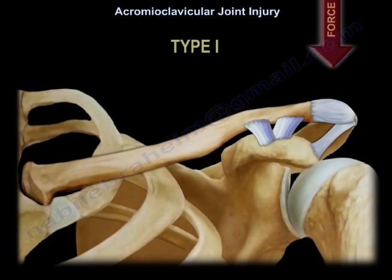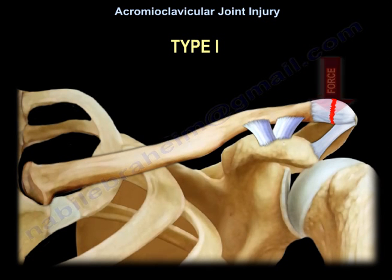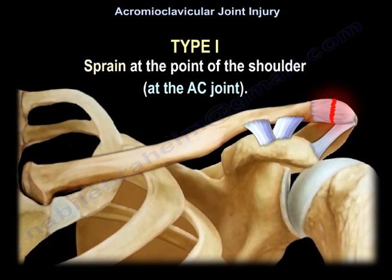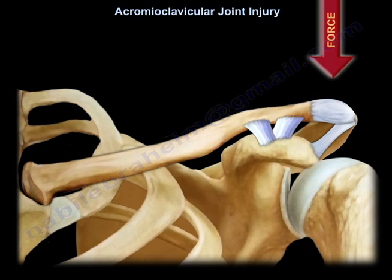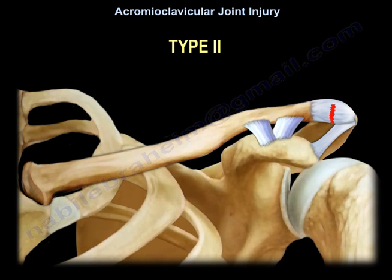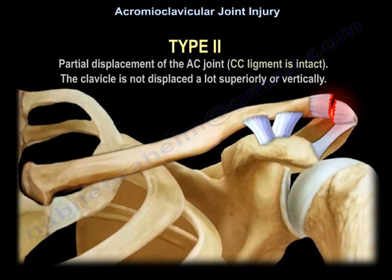Clinically, Type 1 is a sprain at the point of the shoulder at the AC joint. Type 2 is partial displacement — because the coracoclavicular ligament is intact, the clavicle is not displaced much superiorly or vertically.